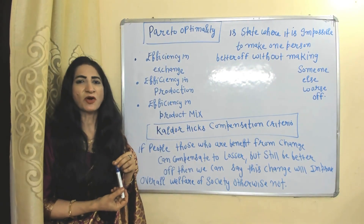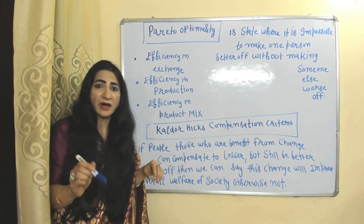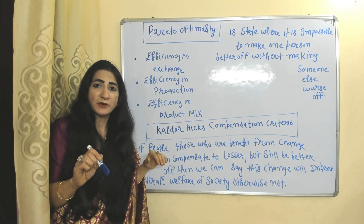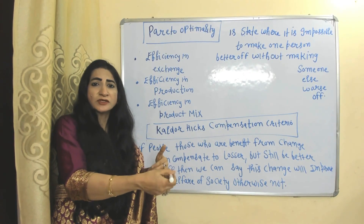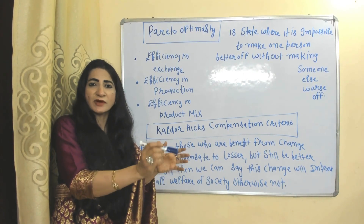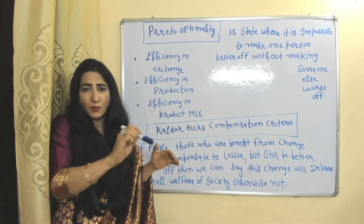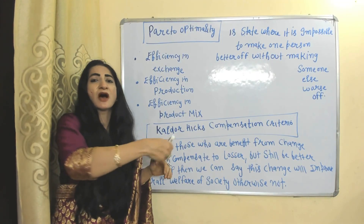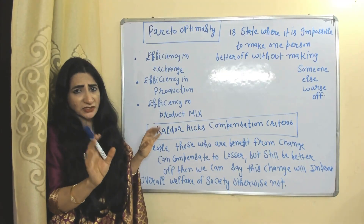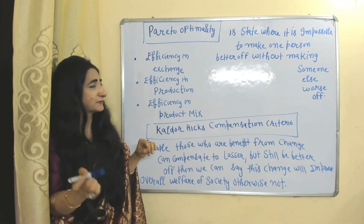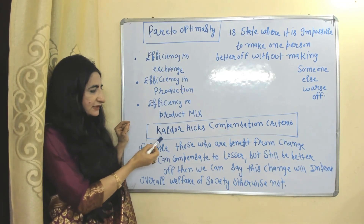Pareto optimality is a state where it is impossible to make one person better off without making someone else worse off — you cannot give a benefit to one person without imposing a loss on someone else. There are mainly three conditions of Pareto optimality: efficiency in exchange, efficiency in production, and efficiency in product mix.